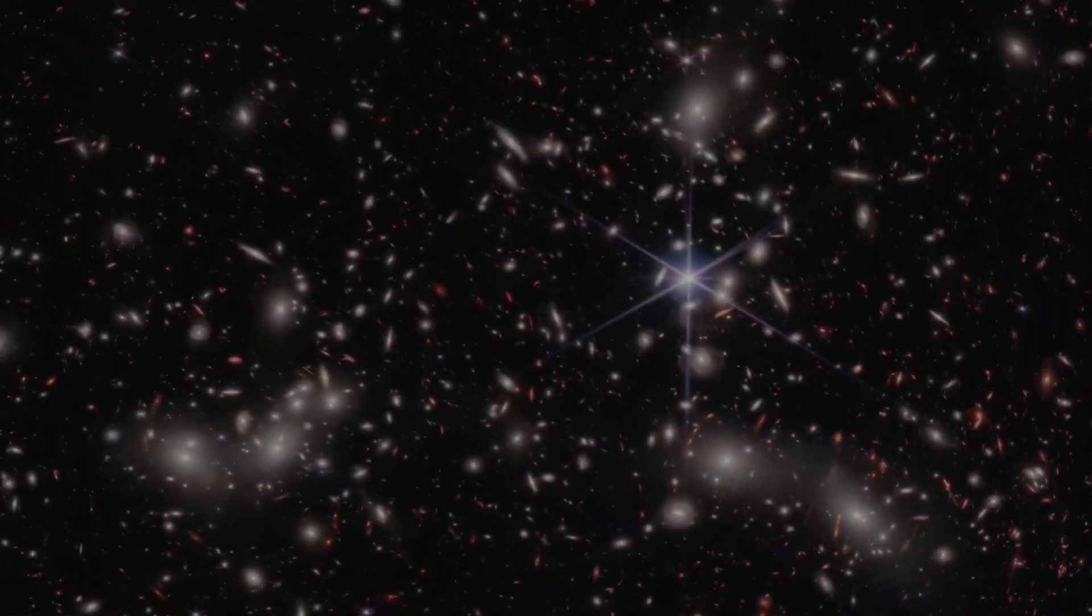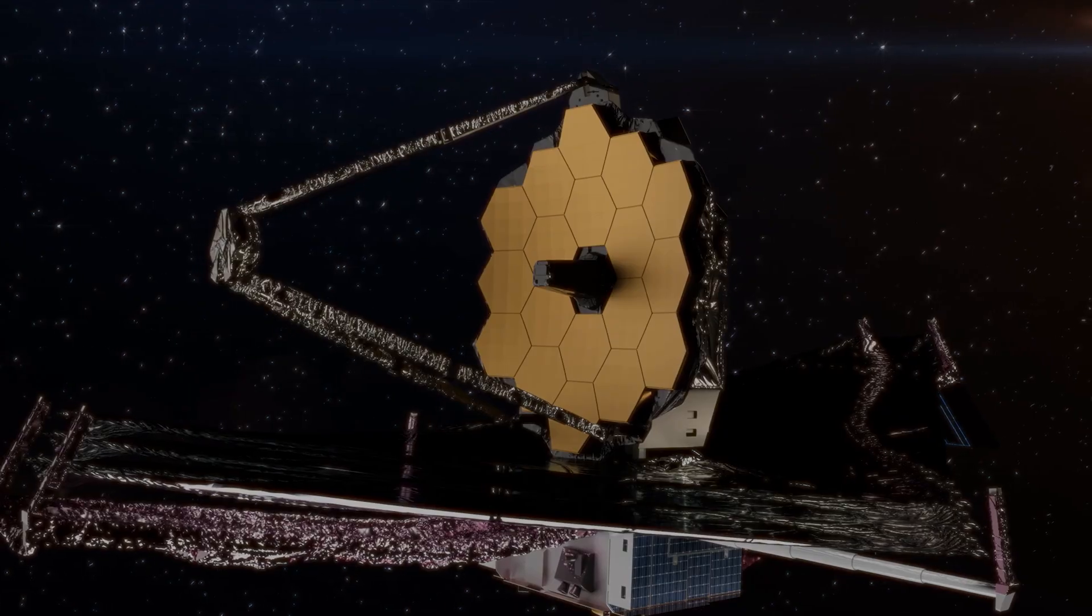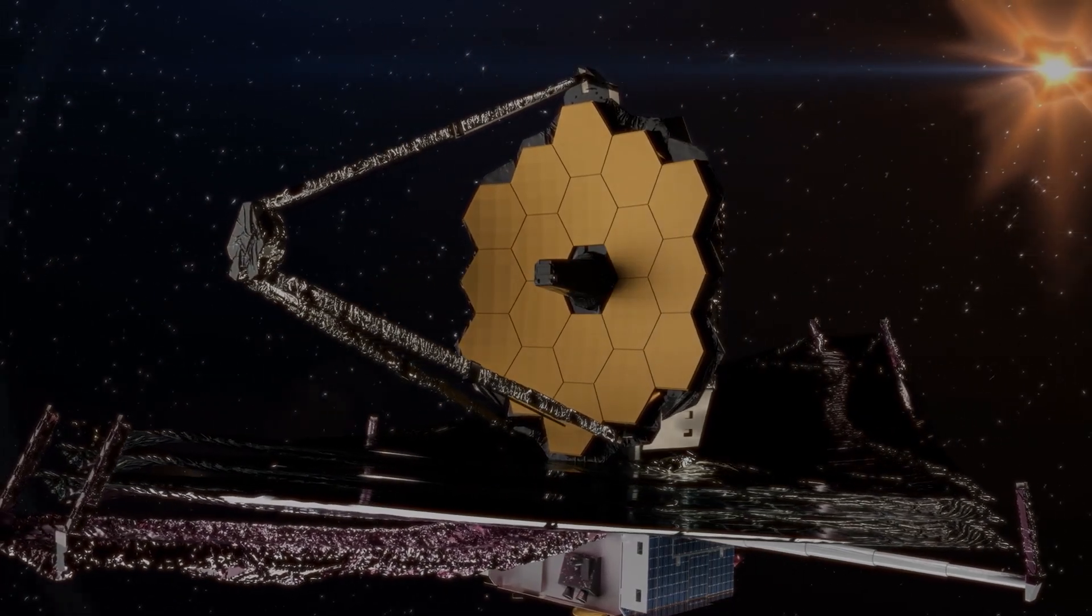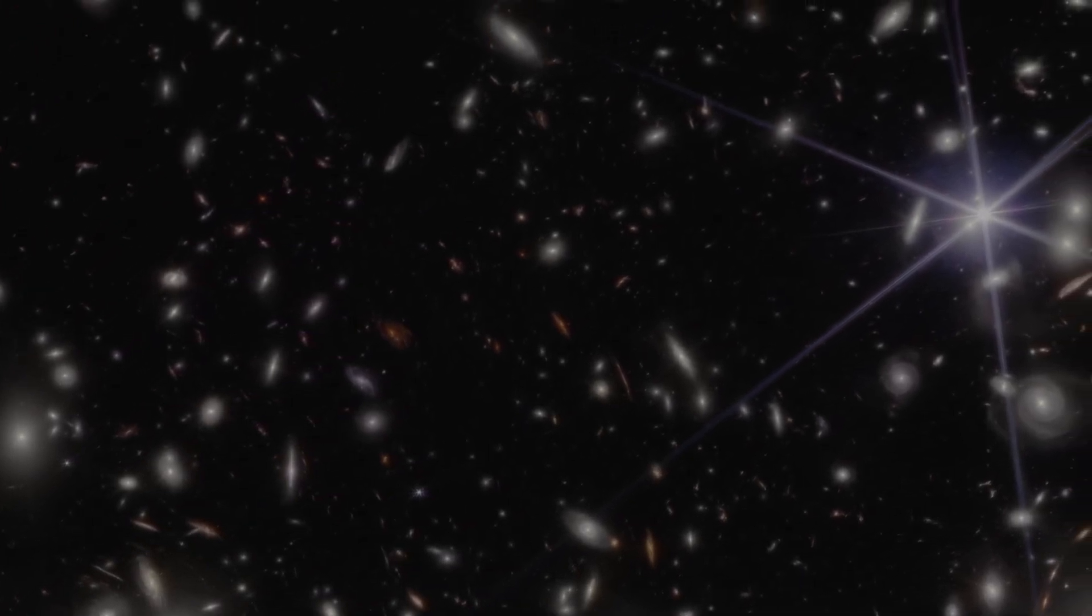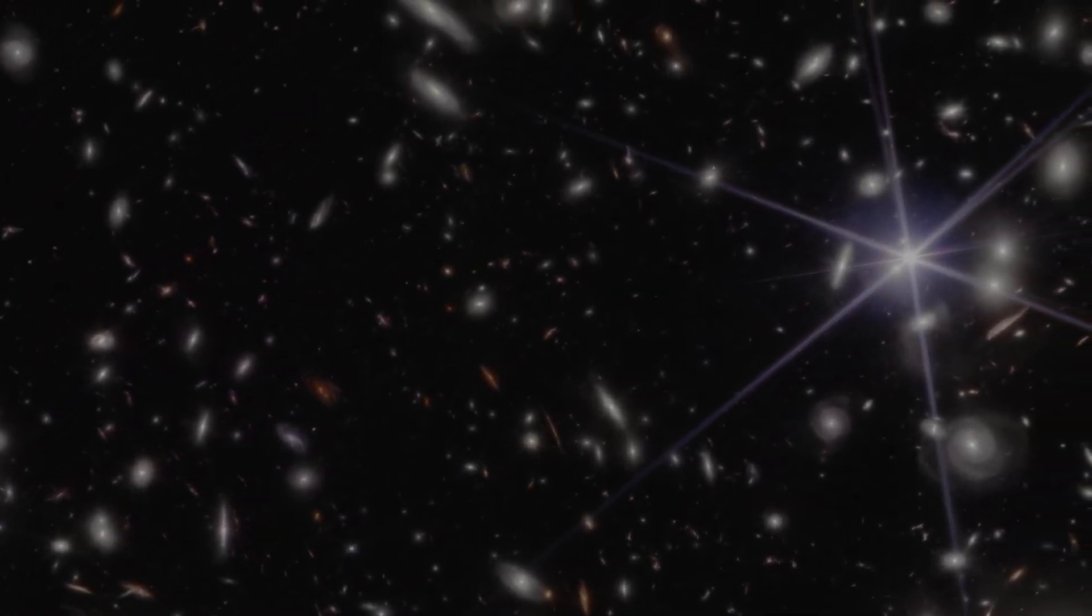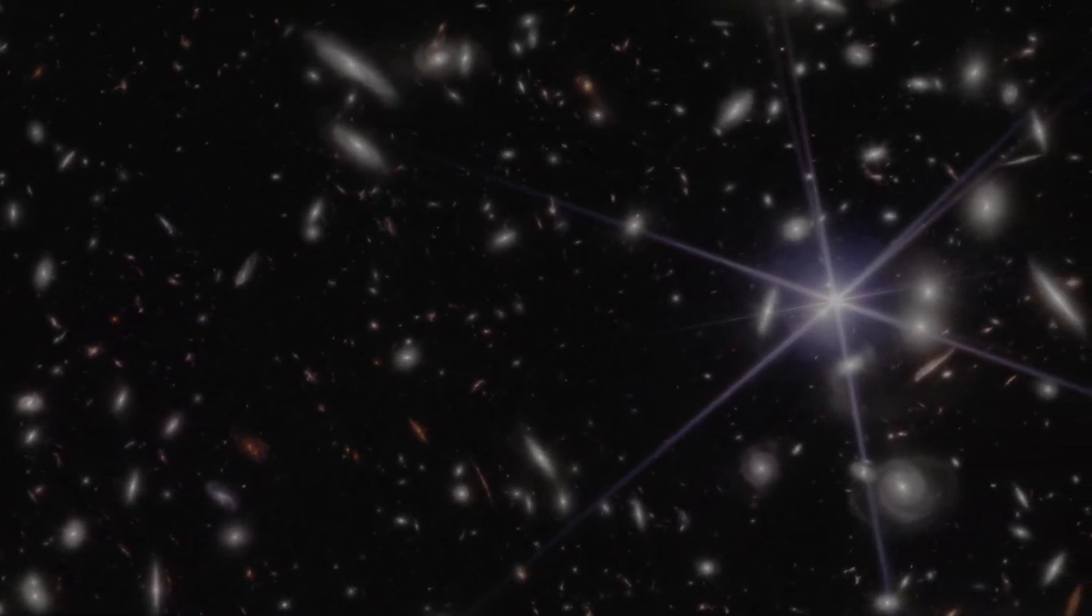A unique visual artifact caused by Webb's segmented, hexagonal mirror. Surrounding this star were clusters of galaxies, glowing ethereally against the dark backdrop of space.